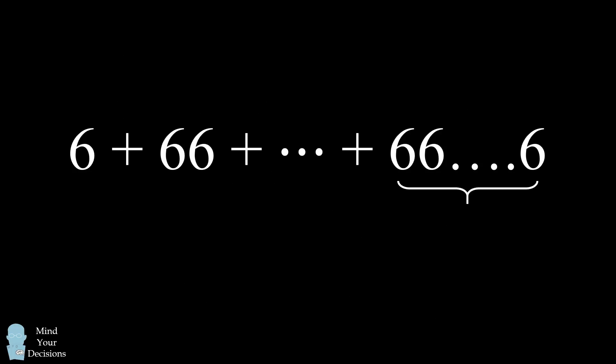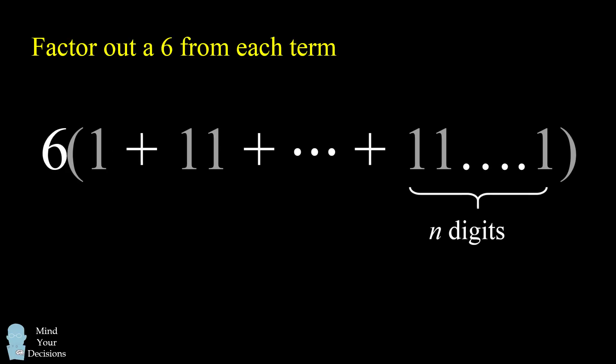So now, let's get to the problem. We'll generalize by saying the last number we're adding has n digits. The first step is we'll factor out a 6 from each term. So we now have 6 multiplied by the following sum, 1 plus 11 plus 111 plus so on, all the way until the last term has only ones for n digits.